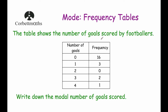So the next question says the table shows the number of goals scored by footballers. So we've got number of goals scored: 0, 1, 2, 3, or 4. The frequency shows 16 people didn't score any goals, 3 people scored 1 goal, no people scored 2 goals, 2 people scored 3 goals, and 1 person scored 4 goals. The question says write down the modal number of goals scored. The highest frequency is obviously 16, and the number with the highest frequency is 0, so 0 is the modal number of goals scored.